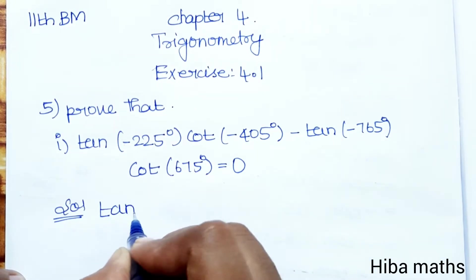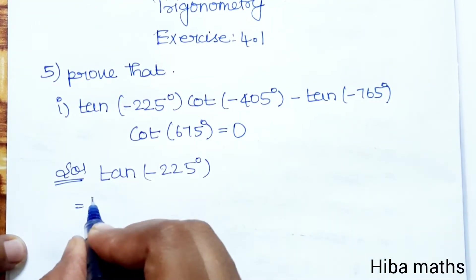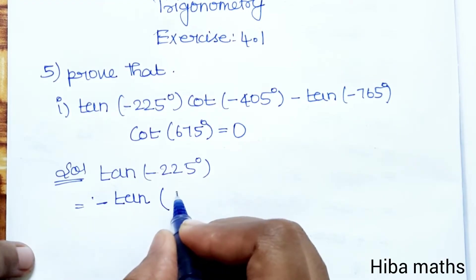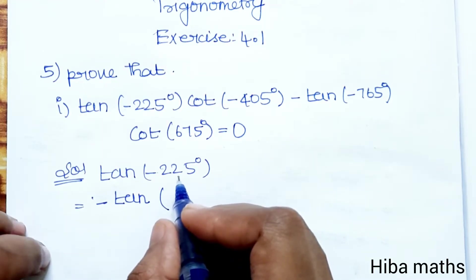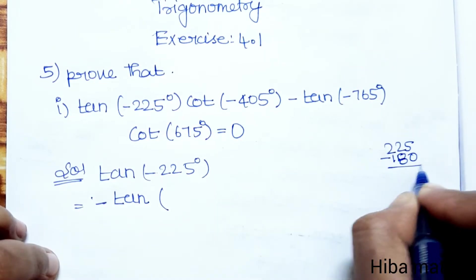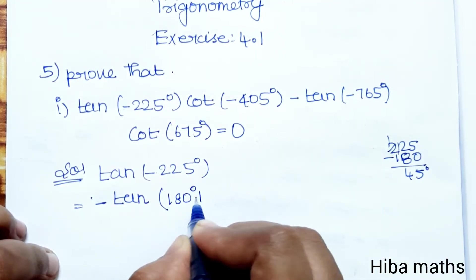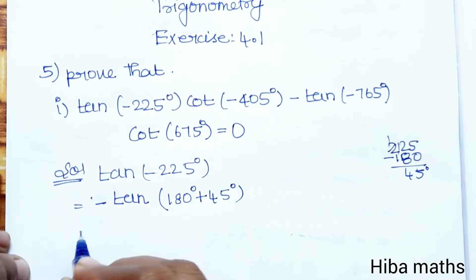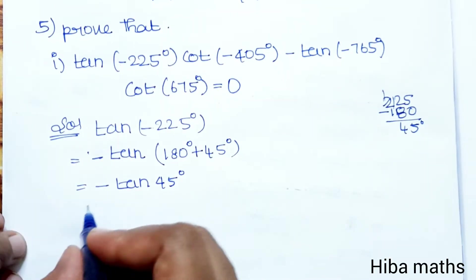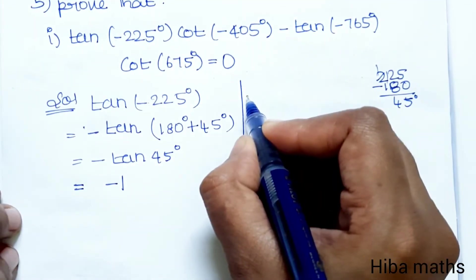First, solve tan(-225°). Since tan is an odd function, tan(-225°) = -tan(225°). Now 225° = 180° + 45°, so tan(225°) = tan(45°) = 1. Therefore tan(-225°) = -1.